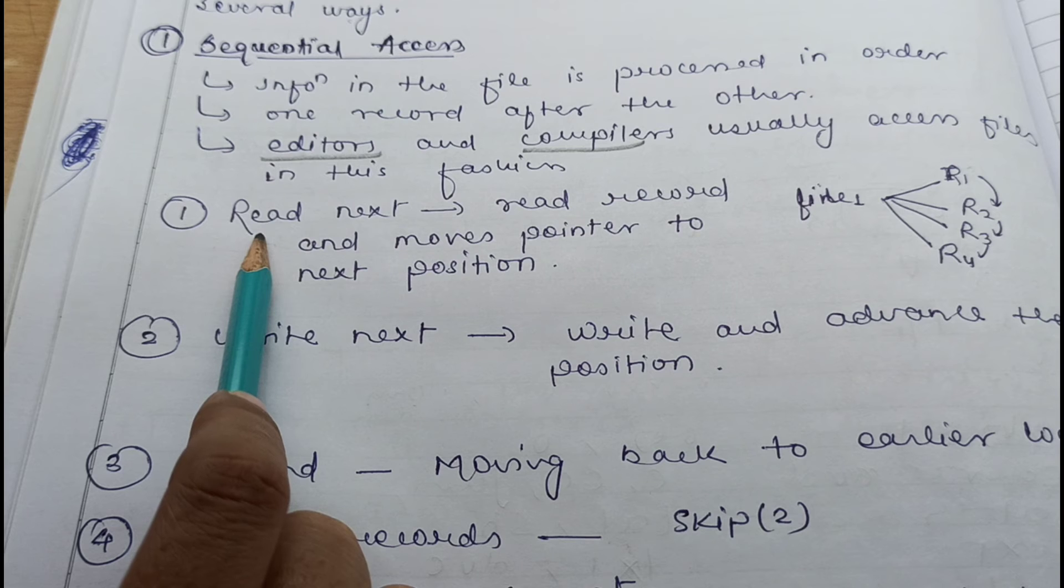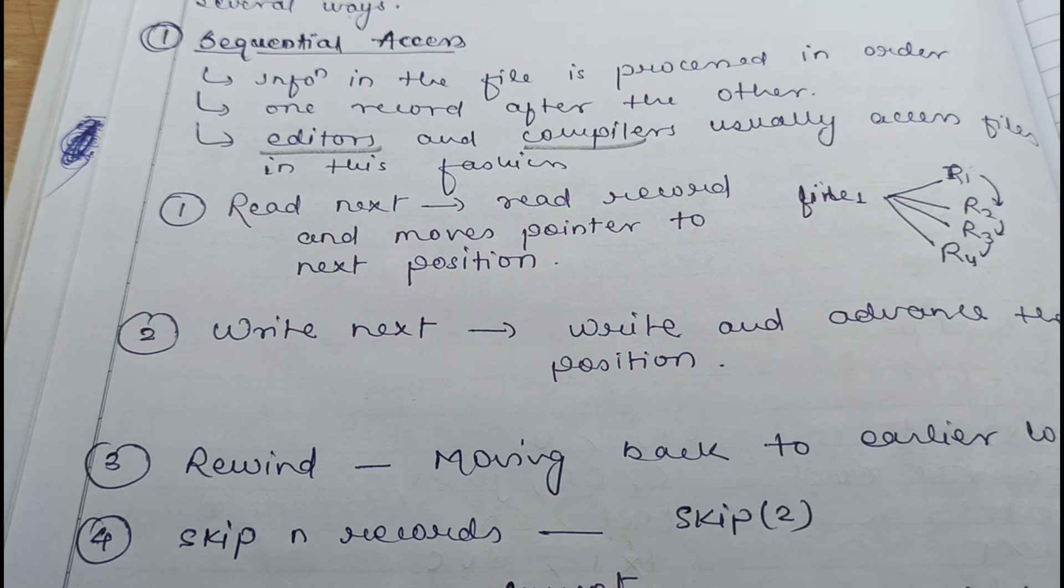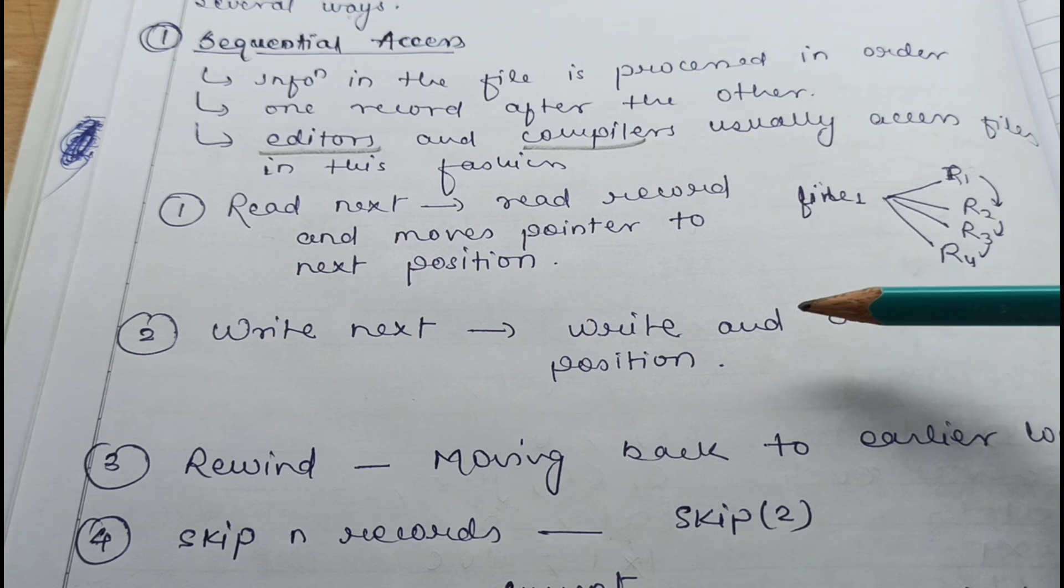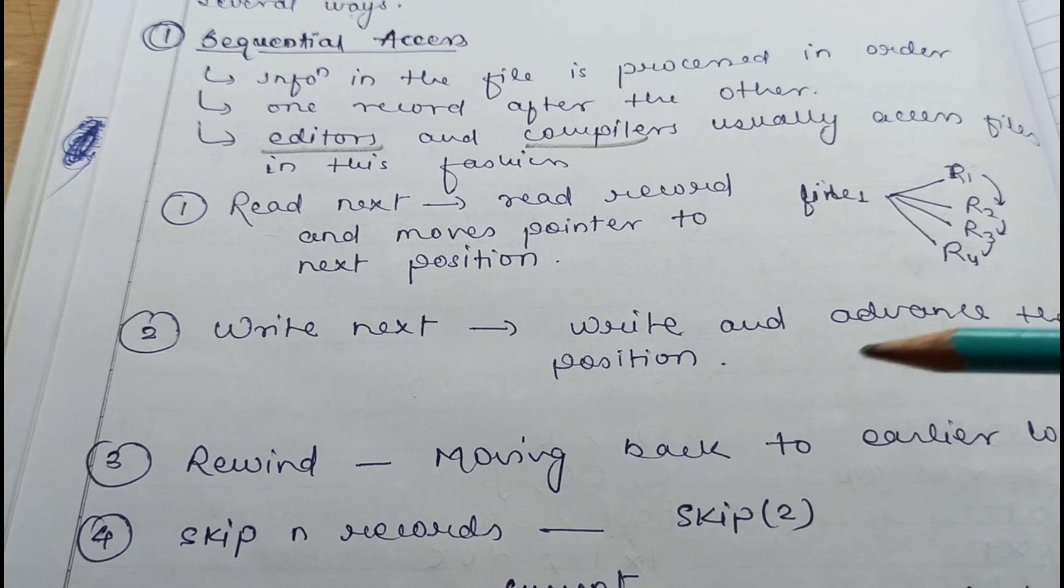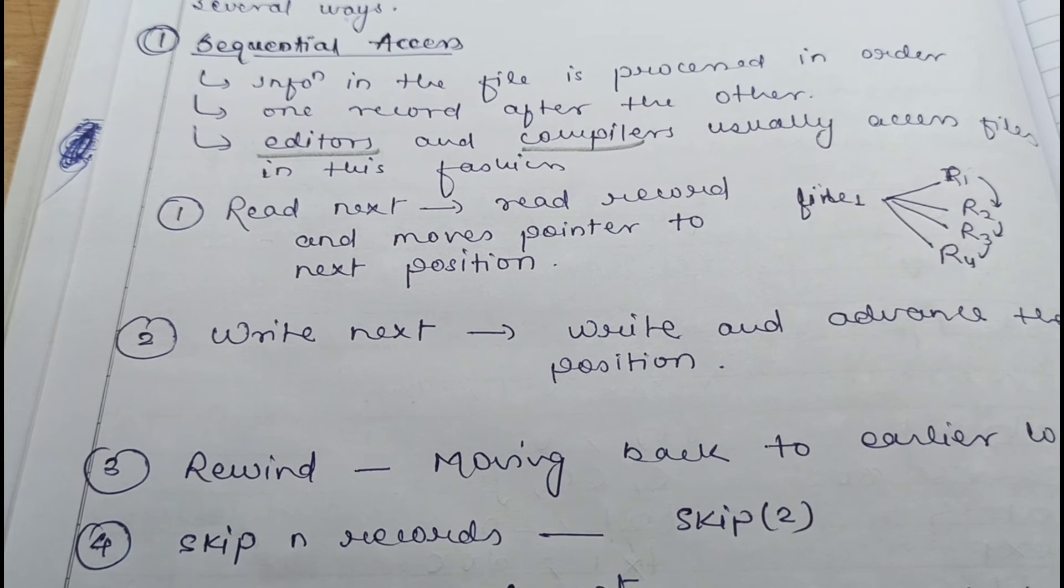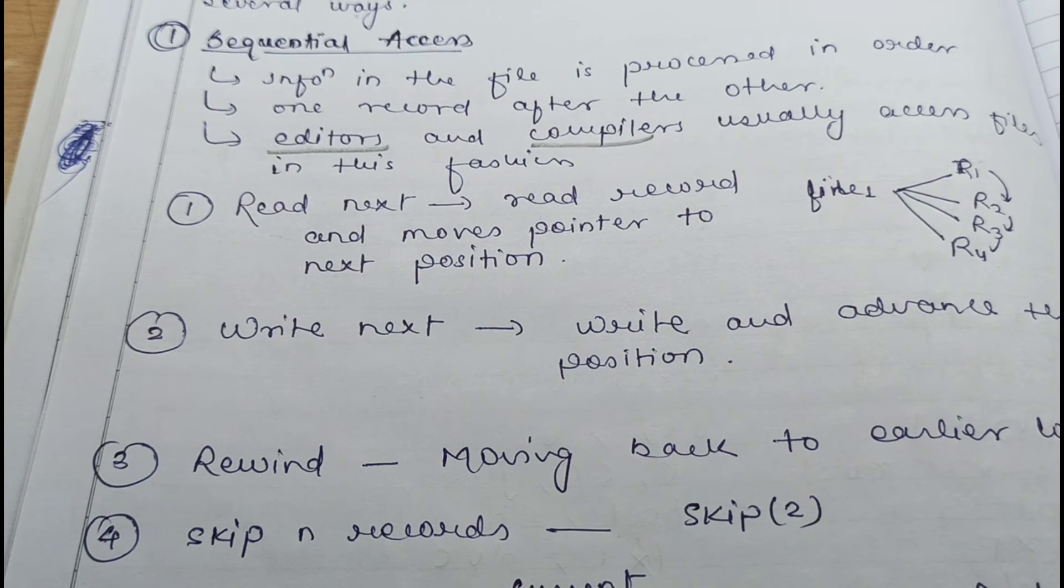If you want to perform a read operation, because you are going sequentially, you have to read the record that you want to read and then advance the pointer to the next position. So it will read the record and move the pointer to the next position - read next. Write next works in the same way: write the record you want, mostly at the end of the file, write and advance the position of the write pointer or make a new end of the file. Rewind means moving back to earlier location. Skip n records means in some sequential access methods, in some devices, skip operation is there where we can skip some records.